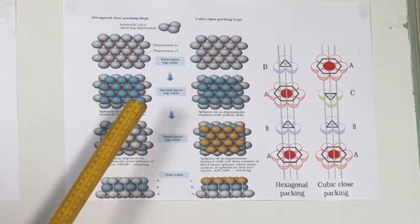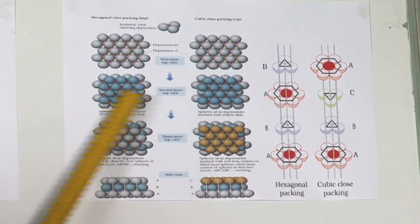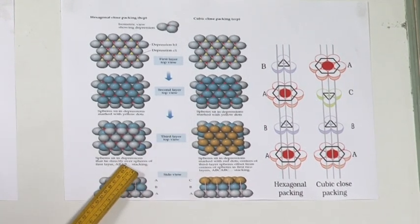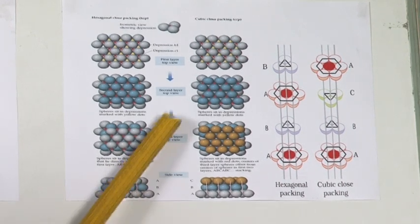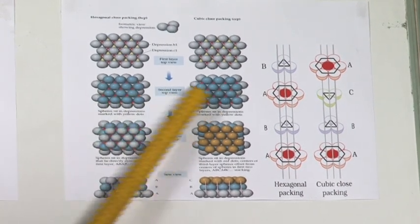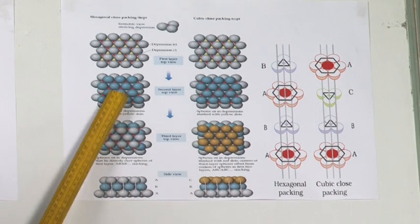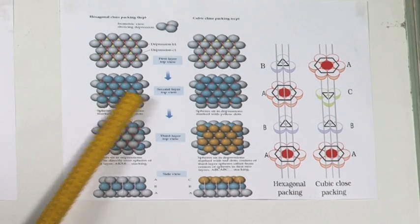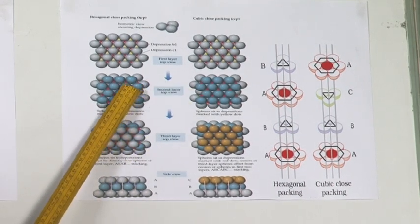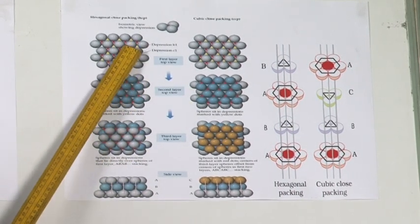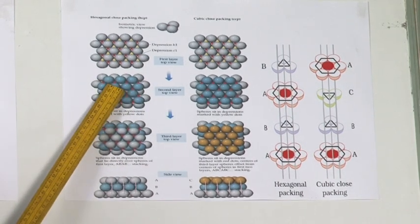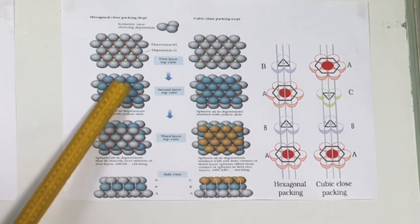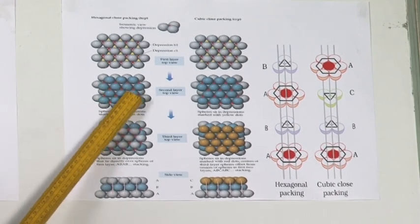When you go to the next layer — the third layer — after the second layer is done, a white void and a red void are visible. The red voids are the voids which are from the first layer, and the white voids are from the second layer, between these blue spheres.